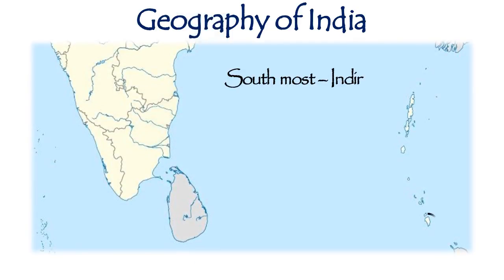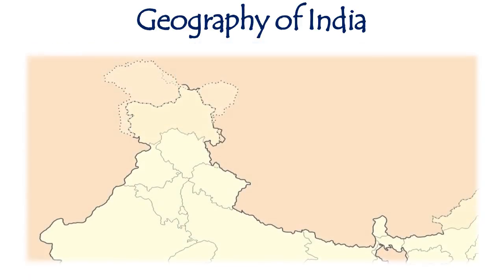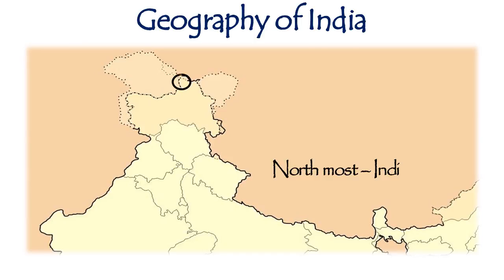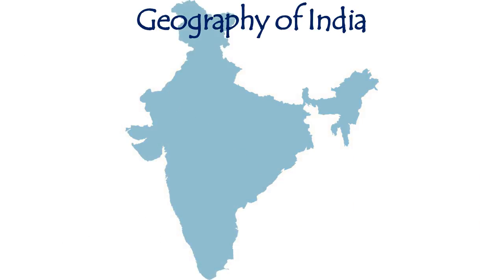The southernmost point of India is called Indira Point. This Indira Point was previously known as Pygmalion Point. It is located in the Nicobar Island at 6 degrees 30 minutes north latitude. The northernmost point of India is known as Indira Col, and it is located in Jammu and Kashmir.